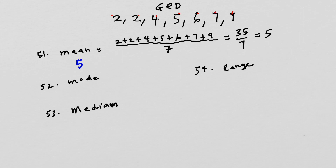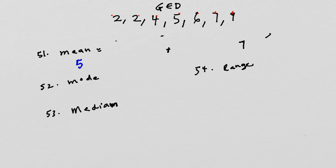Mean is average — you add everything and divide by the number of terms, the number of objects or things that you have. Now the mode is the item with the highest frequency — the one that repeats itself the most. The mode here is two, because two happens two times. So the one that happens the most will be your mode, and here it is two.